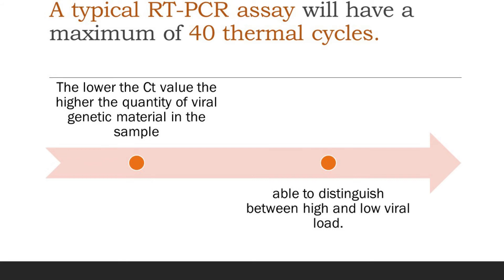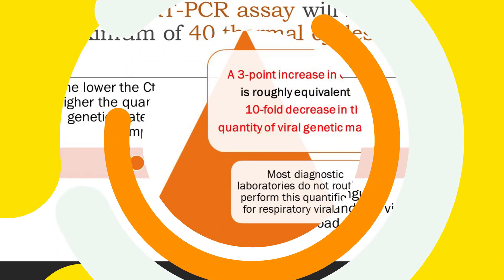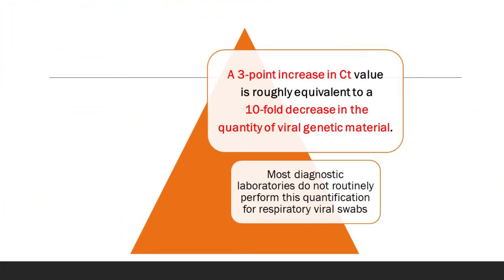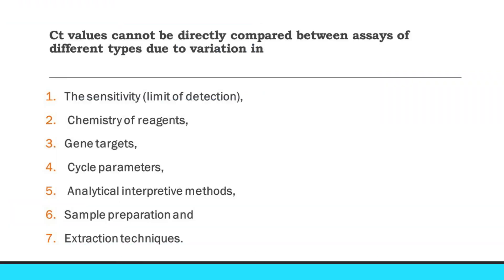We are able to distinguish whether the patient has a high viral load or a low viral load. A 3-point increase in CT value is roughly equivalent to a 10-fold decrease in the quantity of viral genetic material. For example, if a patient initially has a CT value of 28 and in the next test the CT value goes to 25, there is a 3-point decrease which means a 10-fold decrease in the quantity of genetic material in that particular patient.